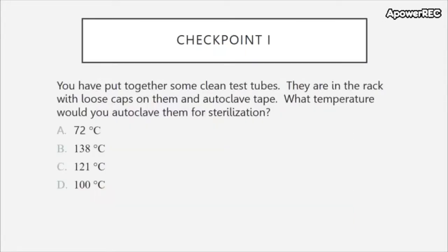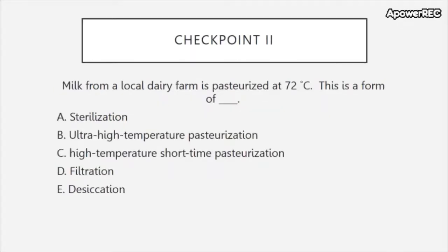Checkpoint 1: You have put together some clean test tubes in the rack with loose caps and autoclave tape. What temperature would you autoclave them for sterilization? Checkpoint 2: Milk from a local dairy farm is pasteurized at 72 degrees Celsius. This is a form of blank.